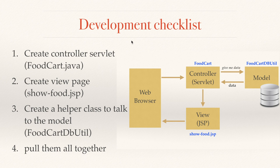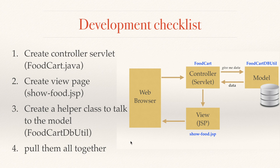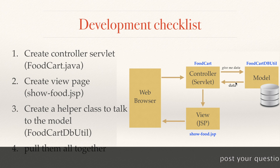This is our development checklist — a to-do list to keep things simple. First, we are going to create our controller servlet: FoodCat.java. Then I'll create the view page: showfood.jsp. Then I'll create the helper class to talk to the model: FoodCatDBUtil. Finally, I'll pull all these together and demonstrate how MVC actually works in real time.